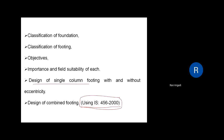The footing could be rectangular or square, but the column may be circular, rectangular, or square — for that column you need to design the footing. Here they mentioned with and without eccentricity, meaning for the concentric load as well as for the eccentric load, you need to design the footing.